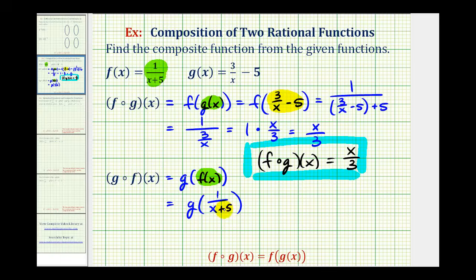And now this becomes the input into function g, which means we'll substitute this quantity here for the x in function g. So this is equal to three divided by one all over x plus five, and then minus five.